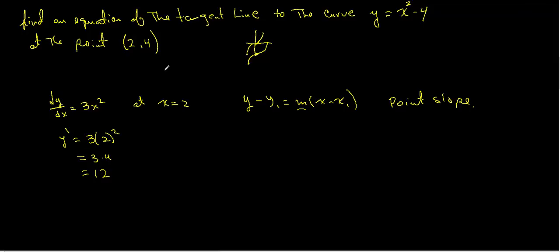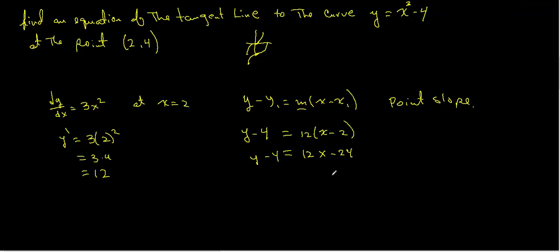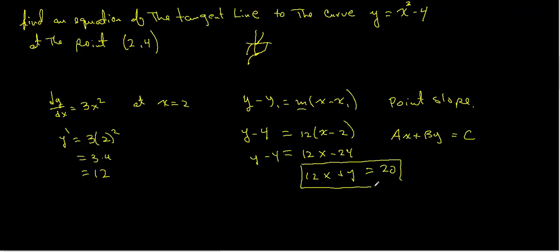Substituting, with y₁ equals 4 and slope equals 12, we get y minus 4 equals 12 times x minus 2. Simplifying: y equals 12x minus 24 plus 4. In standard form — ax plus by equals c — this becomes 12x minus y equals 20. These are two simple applications of derivatives.